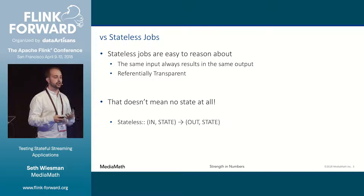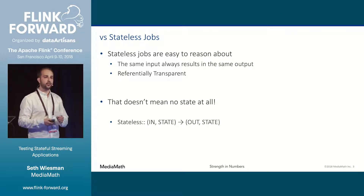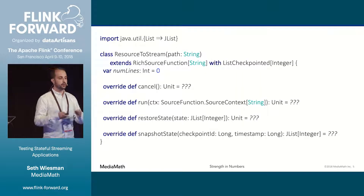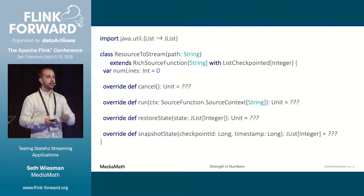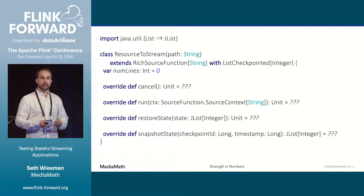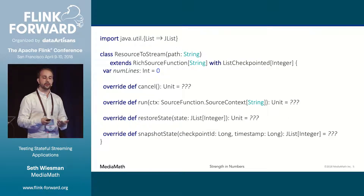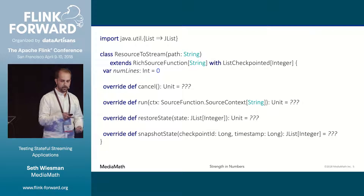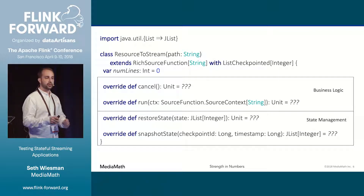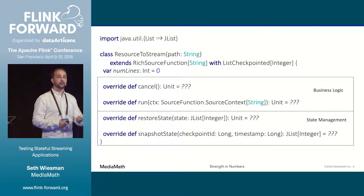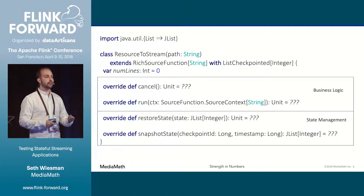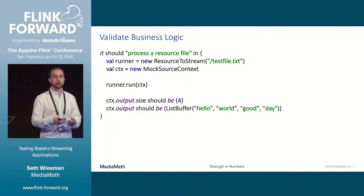This talk is focused around a word count application, and the stipulation we're adding is that everything we do must maintain exactly-once semantics. We'll start by looking at operator state. I want to write a source that reads a file from my resources folder and outputs each line to the stream. We'll implement two interfaces: the source function along with ListCheckpointed for state management. To track our state, we'll count the number of lines output so far, so that if we recover from failure, we know to skip the first N lines of the file.